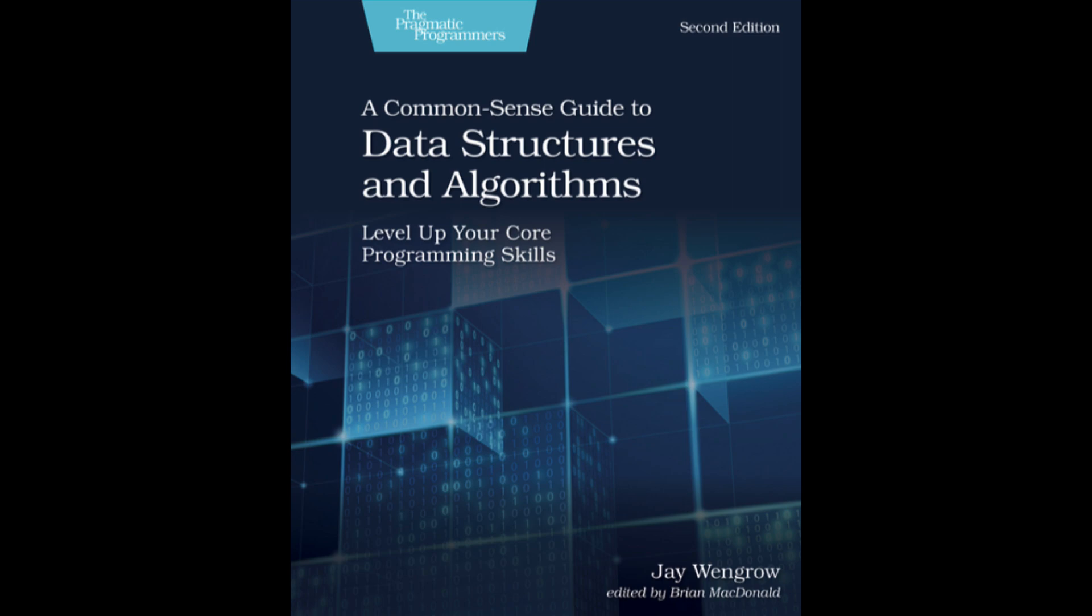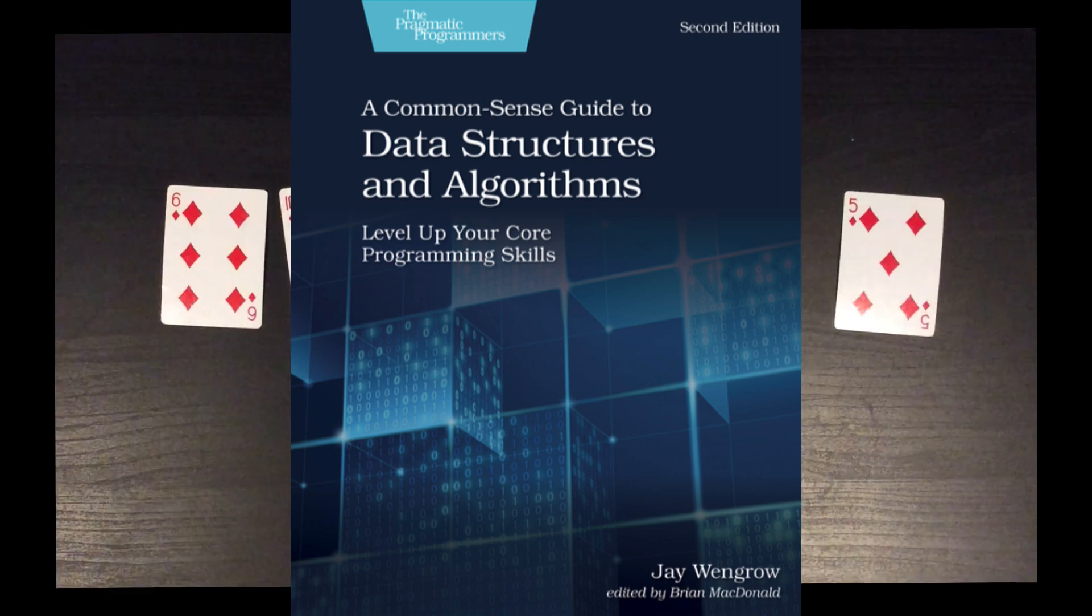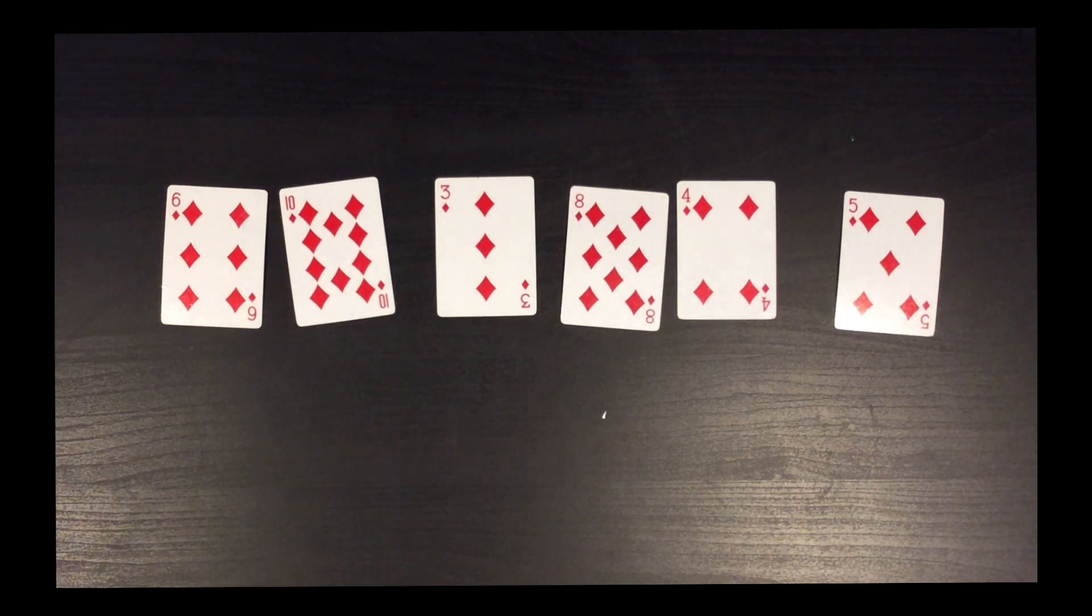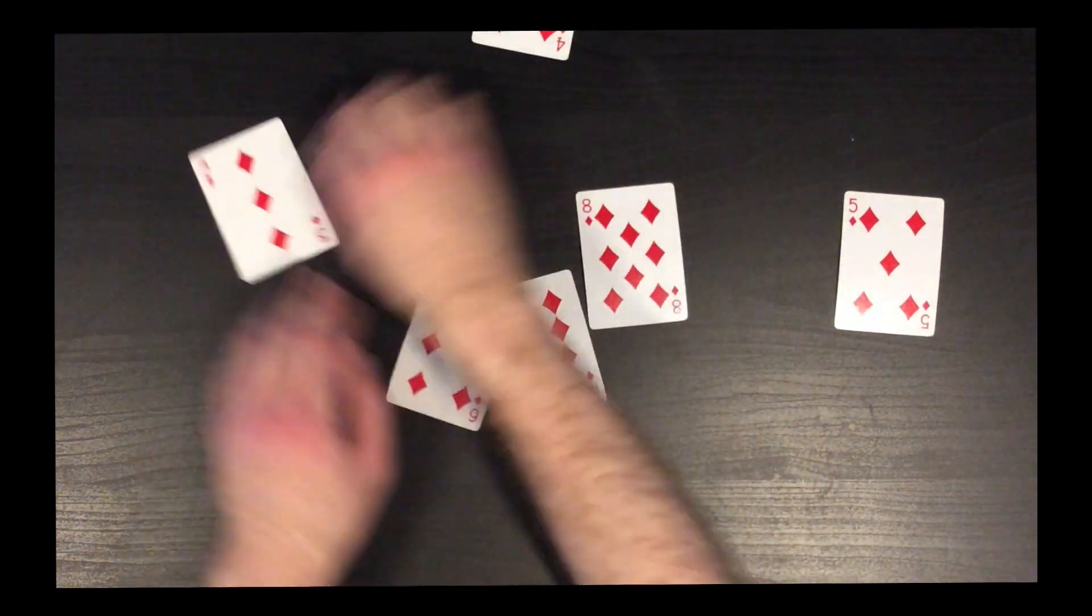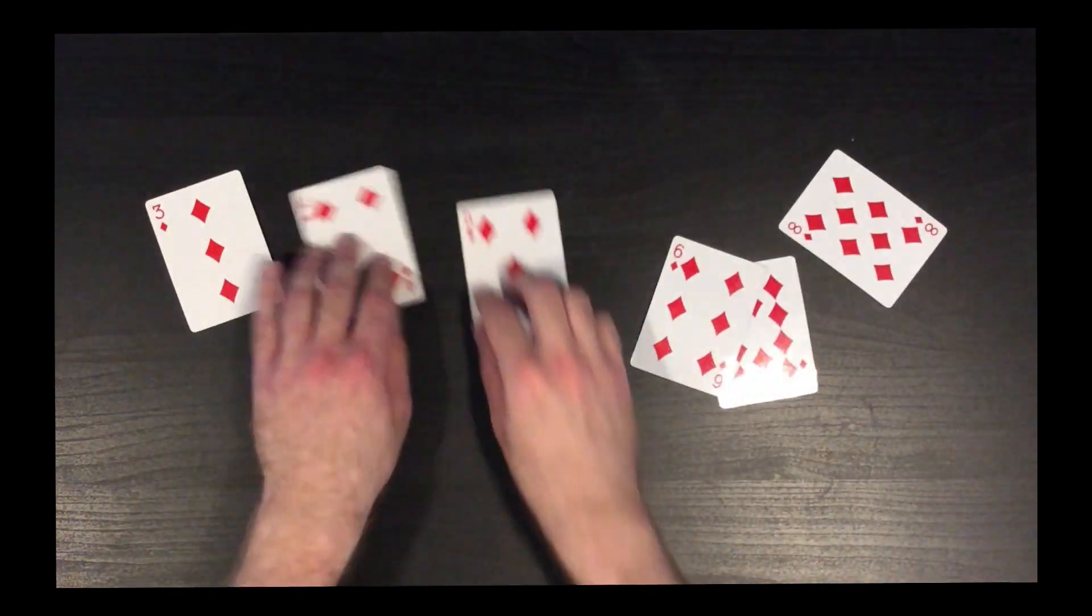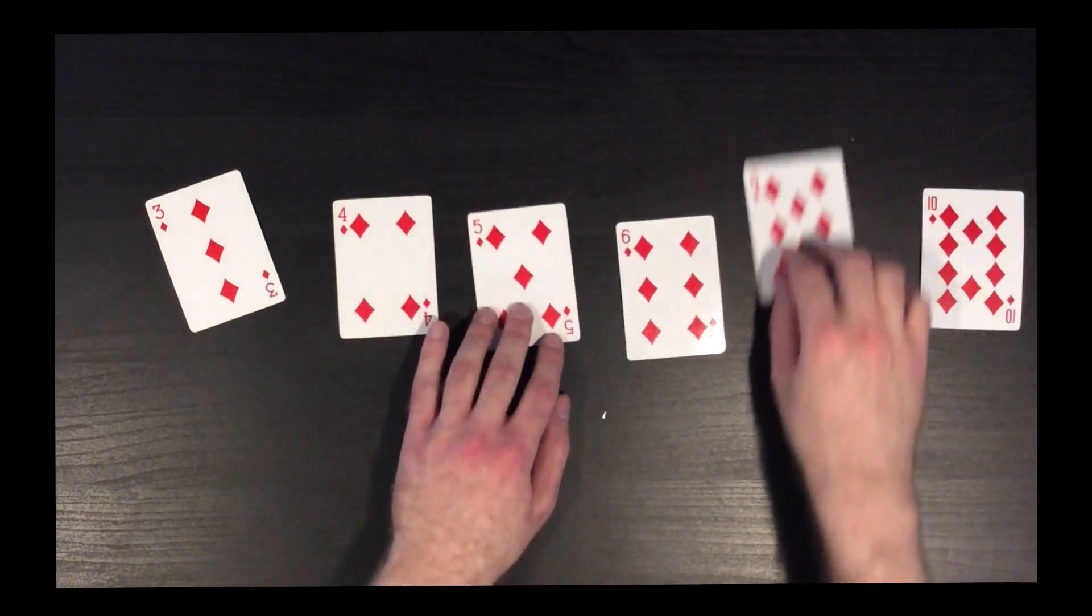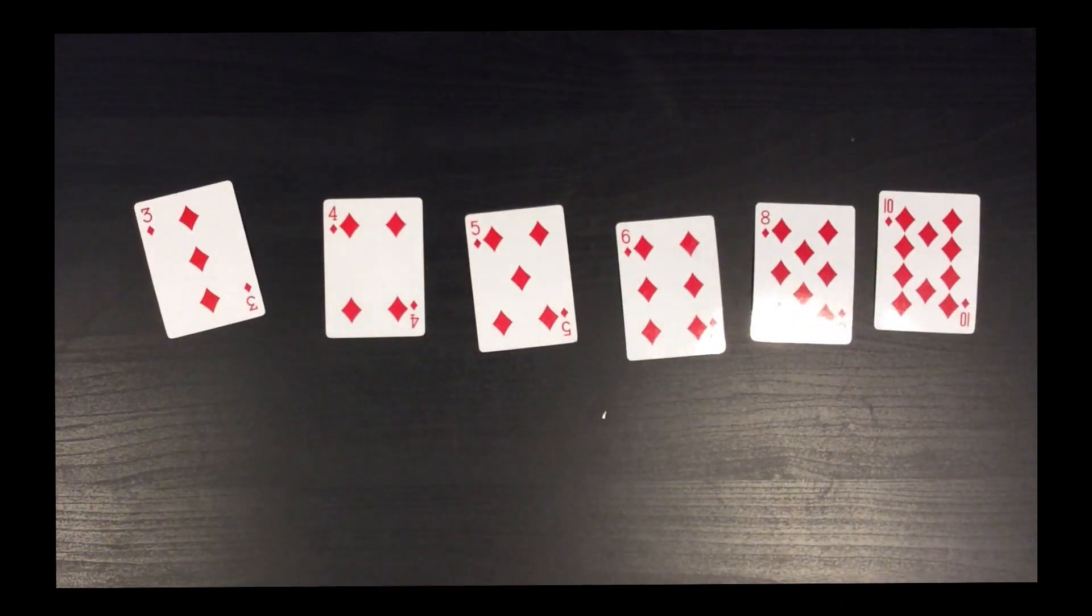Let's dig into one simple algorithm just to whet your appetite. Let's talk about sorting algorithms. Here I have some playing cards that are in random order. If we were to rearrange the cards to put them in order from lowest to highest, as humans, we could just eyeball them and move them around until they're in order. But a computer, on the other hand, doesn't have eyeballs. So how would we tell a computer to sort these cards?